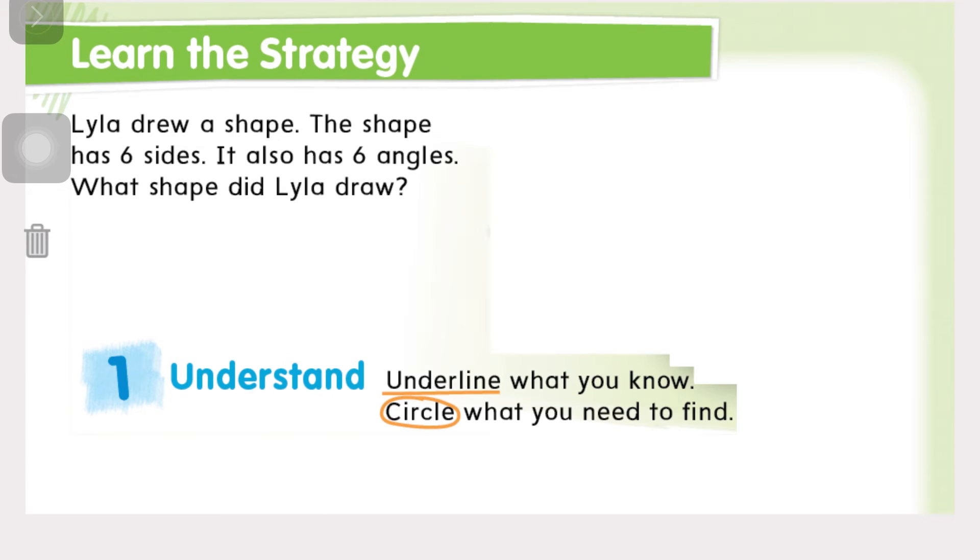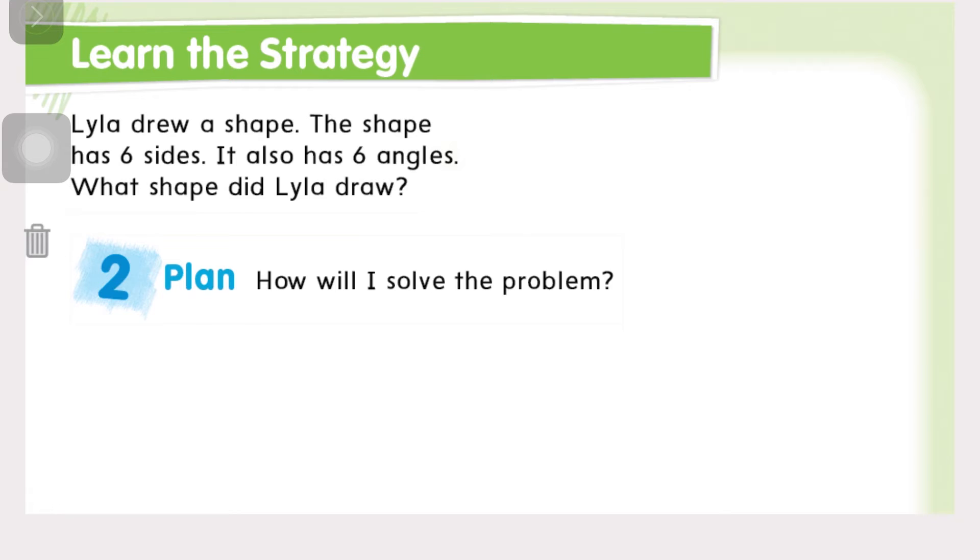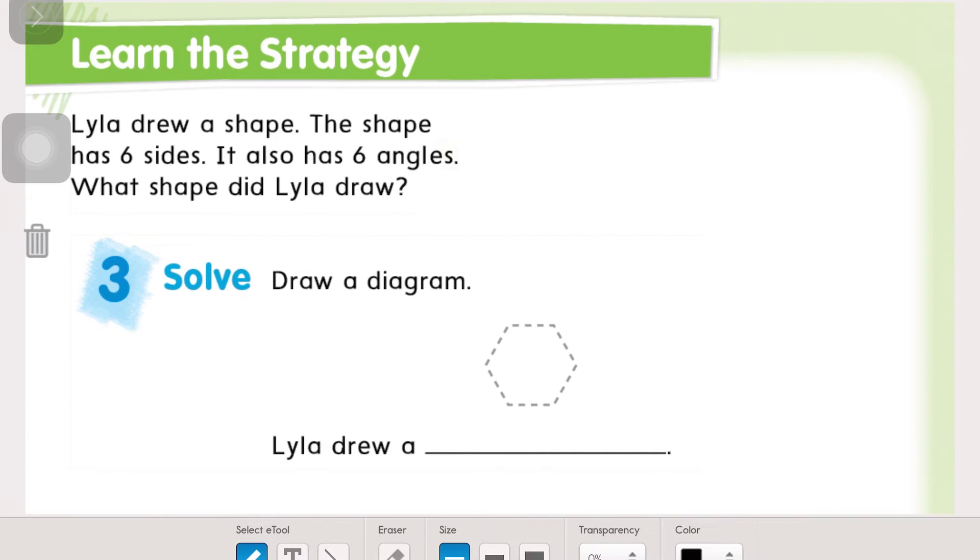Lila drew a shape. The shape has six sides. It also has six angles. What shape did Lila draw? So for step one, it's the same in every strategy that we've learned this year. We're going to underline what we know and circle what we need to find. And then we're going to plan how to solve the problem. So I'm going to go to the second page and solve the problem. We're going to make a diagram.